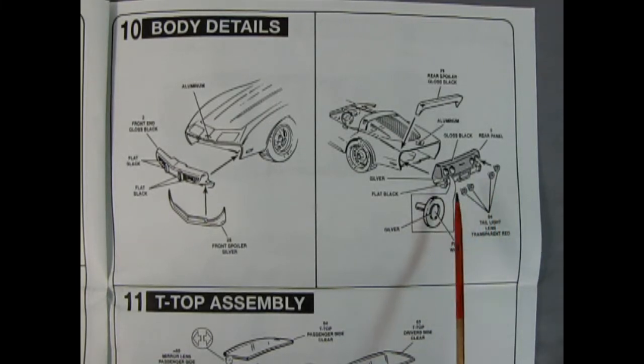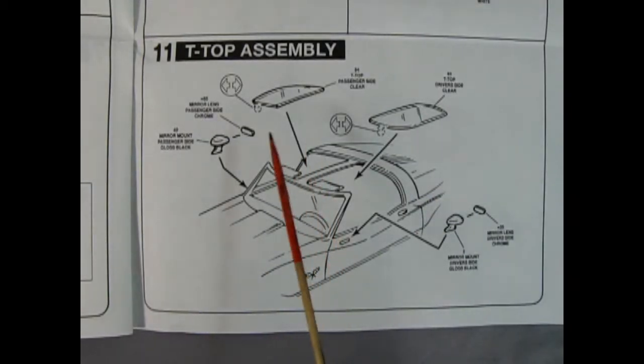Step 11 shows our T-tops being put into place. Now these just sit on the top so that you can always take them off later which really helps you if you need to dust your interior in future years. There's our two rear view mirror housings and the mirror lenses which glue inside.